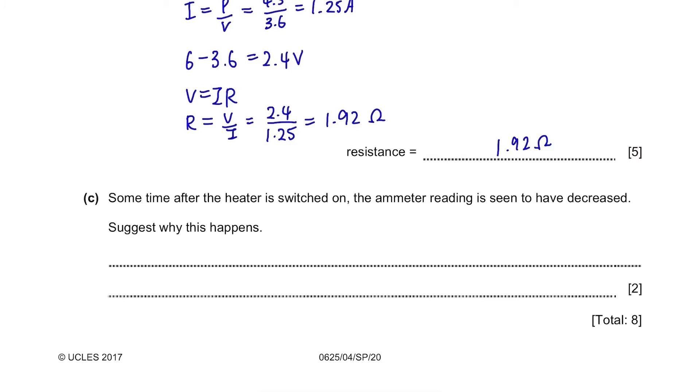Therefore, there will be less voltage supplied to the heater. And remember, V equals IR. If the voltage decreases, the current will also decrease as the resistance will stay constant.